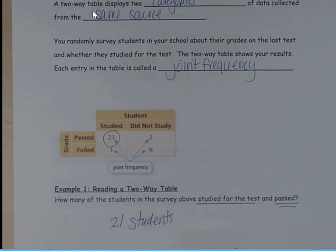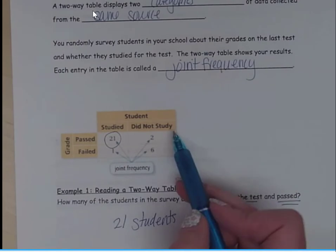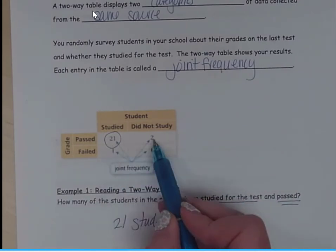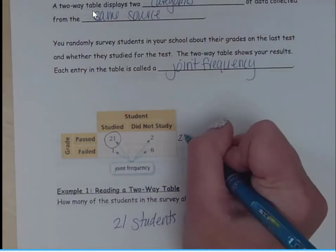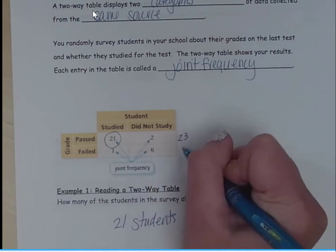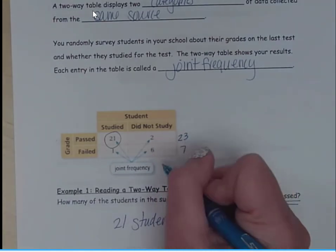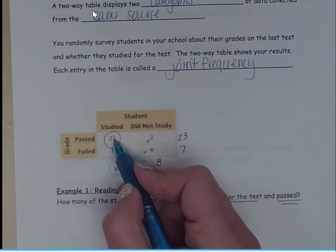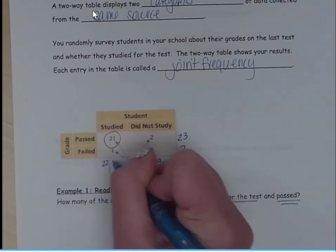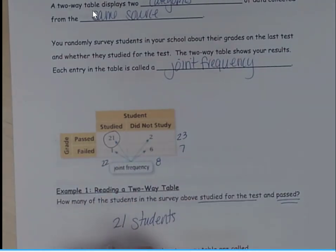Now the sum of the rows and columns in a two-way table are called, so when I add these up, 21 plus 2 is 23, 1 plus 6 is 7, 6 plus 2 is 8, 21 plus 1 is 22. Those numbers there are what we call marginal frequencies.